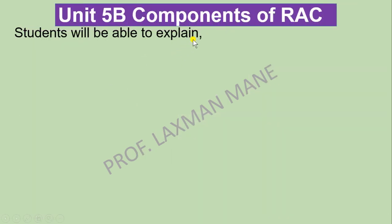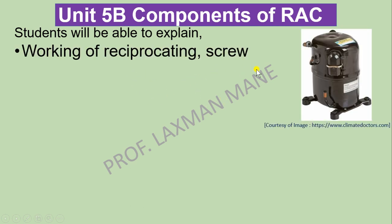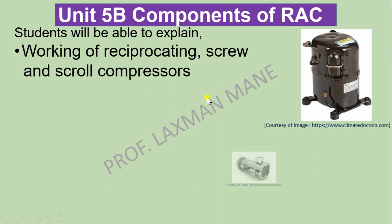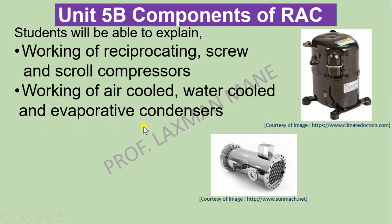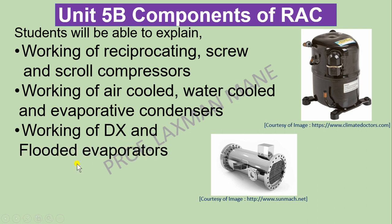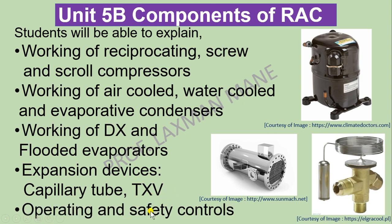Part B includes components of RAC systems, especially the working of reciprocating, screw, and scroll compressors. Then heat exchangers including air-cooled, water-cooled, and evaporative condensers. As evaporators, there are two types: Direct Expansion (dry expansion) type and flooded type evaporators. Types of expansion devices including capillary tube and thermostatic expansion valve will be studied, along with operating and safety controls of these components.